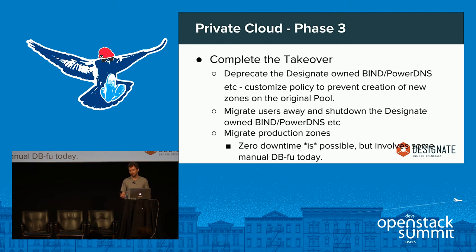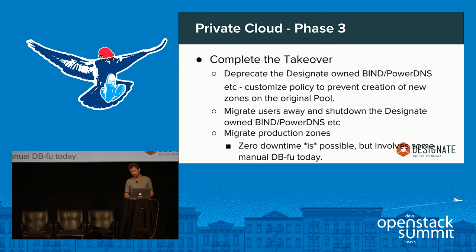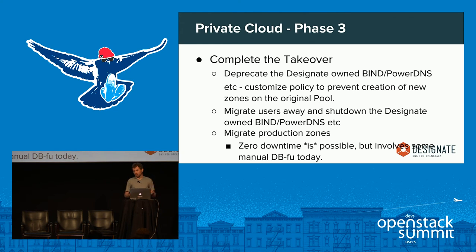At this point you've got two pools — Bind/PowerDNS and Microsoft AD or Infoblox. You'll start asking users to migrate to the AD pool. For moving important production zones, we don't have a great story yet — you can go into the database and work out SQL to dump everything, then update name servers on the existing side. It's something we have to work towards fixing.